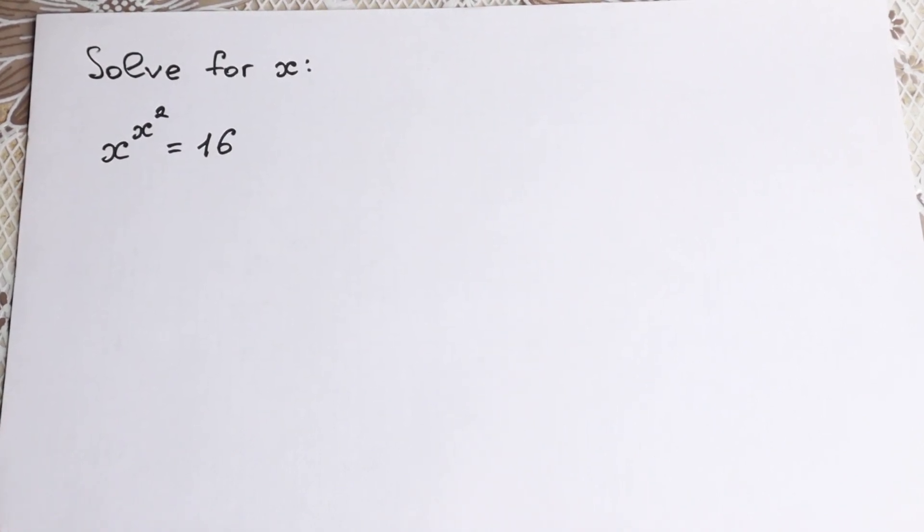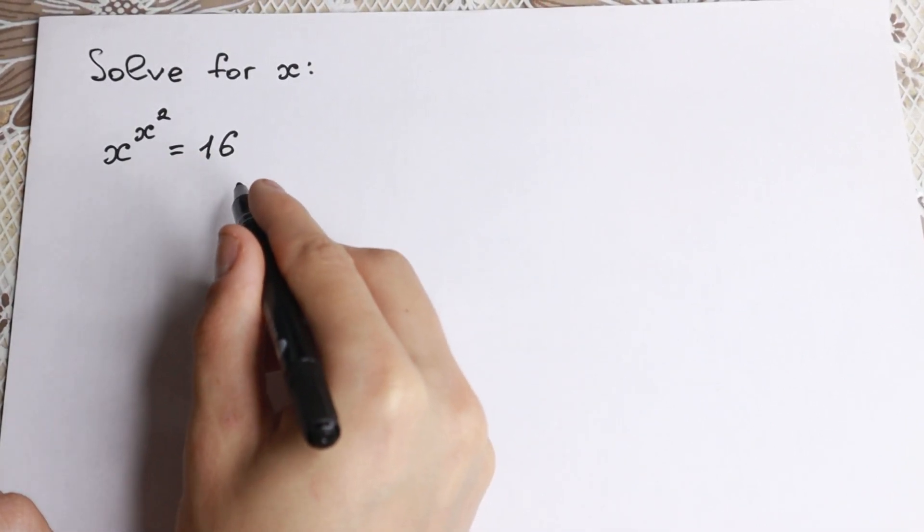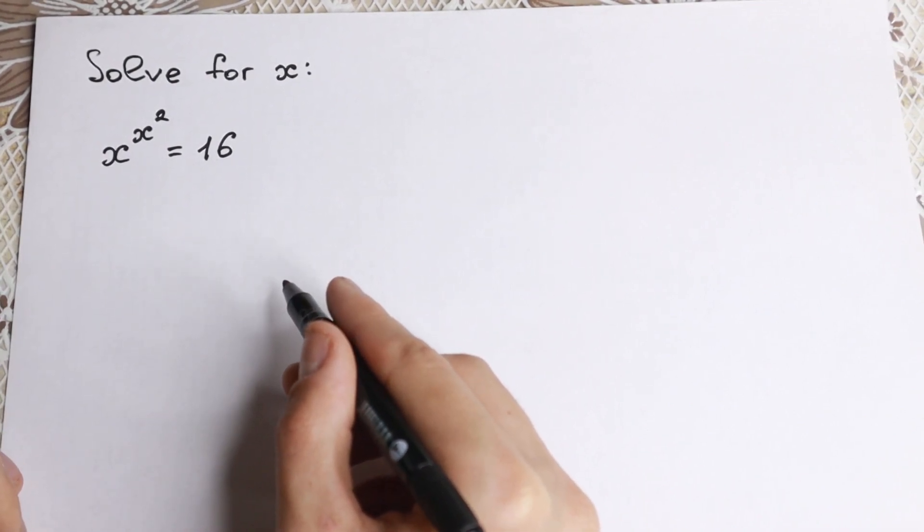Hello everyone, welcome back to Higher Mathematics, happy to see you here. Really interesting, tricky exponential equation today. We have x to the power x squared equal to 16, and we need to find our x in this equation. How can we do this?